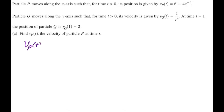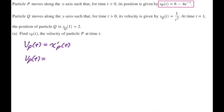For part A, find vp of t. Since vp of t equals x prime p of t, taking the derivative of 6 minus 4e to the negative t gives 0 minus 4 times negative e to the negative t, which equals 4e to the negative t. Make sure to clearly state the relationship between velocity and position — they require that now.